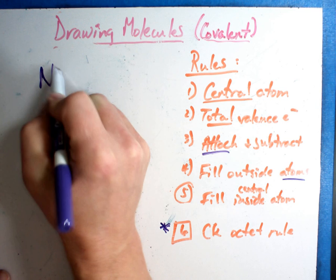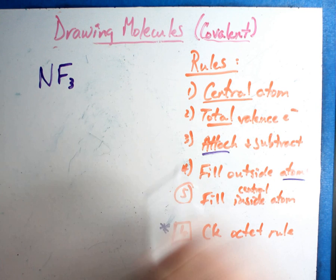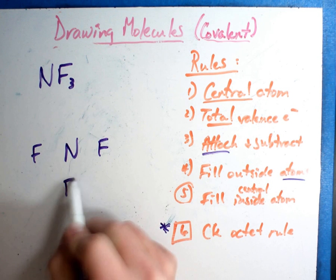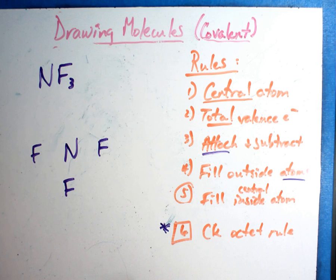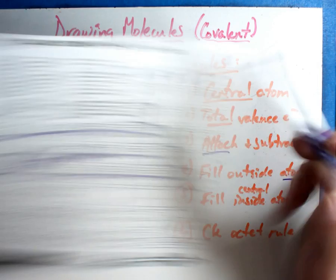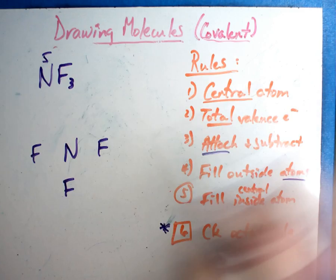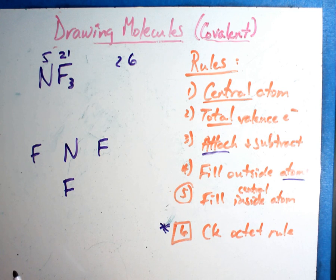Let's try another one real quick - NF3. Going through the rules a little faster this time. The central atom is nitrogen. There are three fluorines - doesn't matter where I put those three fluorines, but there are three of them. Now the math for total valence electrons: nitrogen has five. Fluorine has seven, and there are three of them, so seven times three is twenty-one. Grand total is twenty-six.